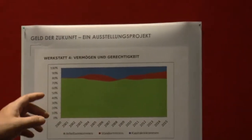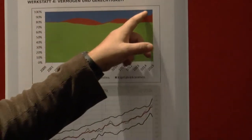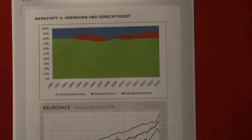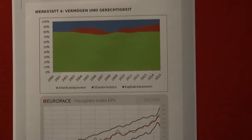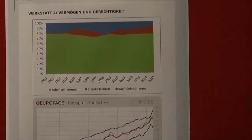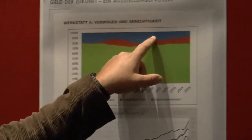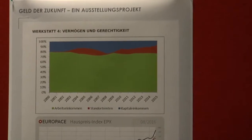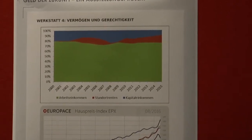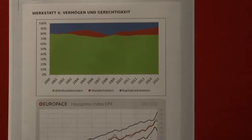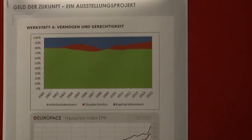Was hat sich verschoben? Im Zuge der Niedrigzinsphase sehen Sie, dass dieses Blaue hier – das sind die Kapitaleinkommen – gesunken ist. Es gibt in den offiziellen Statistiken nur die Kategorie Einkommen aus Unternehmertätigkeit und Vermögen. Was genau Kapitaleinkommen sind und was auf den Boden entfällt, dazu gibt es keine offiziellen Statistiken. Die Kapitaleinkommen sind tendenziell gesunken im Zuge der Niedrigzinsphase – prozentual, wahrscheinlich auch absolut.